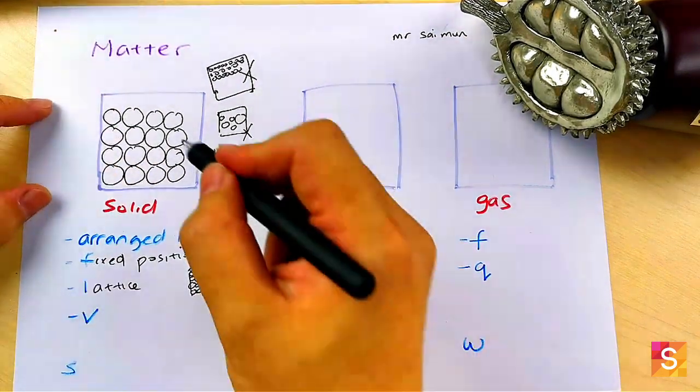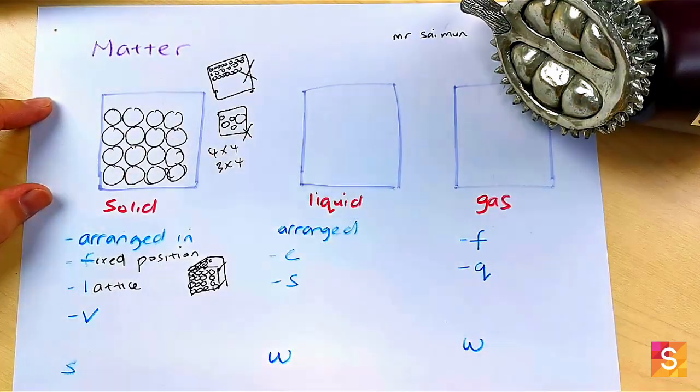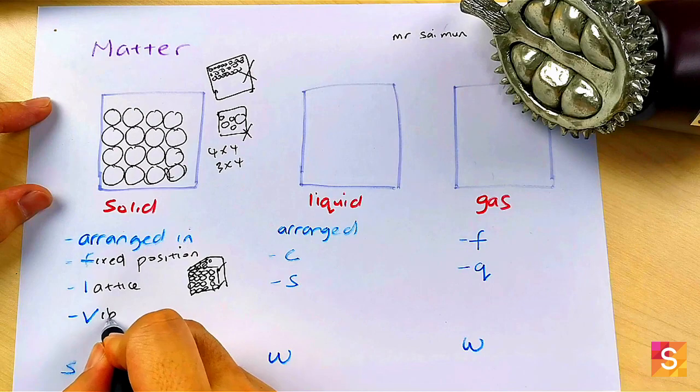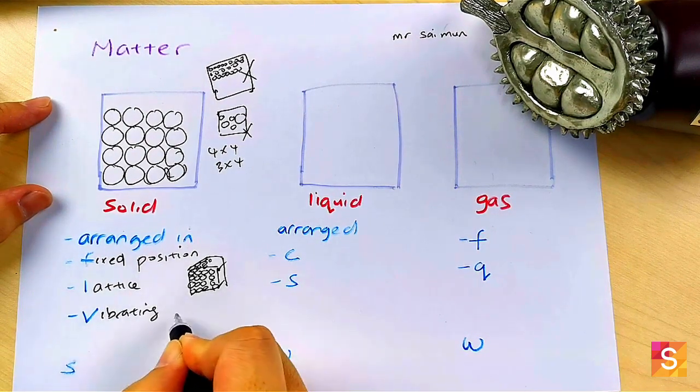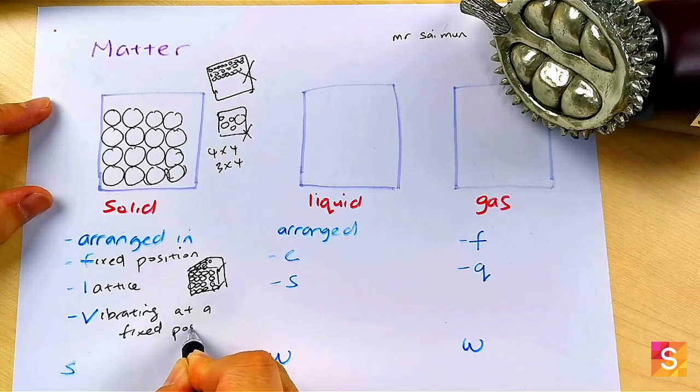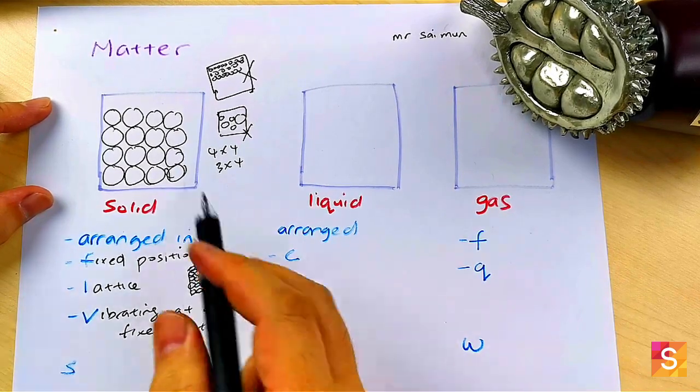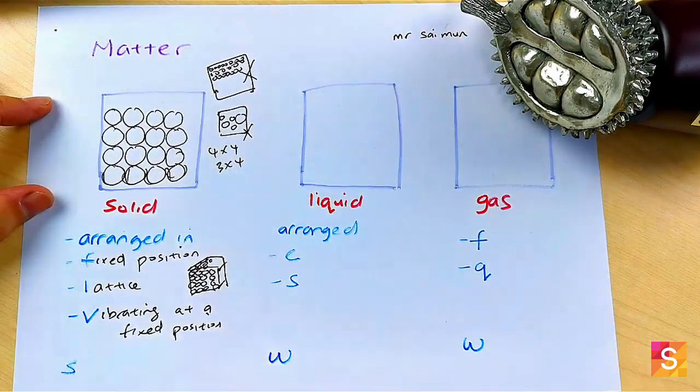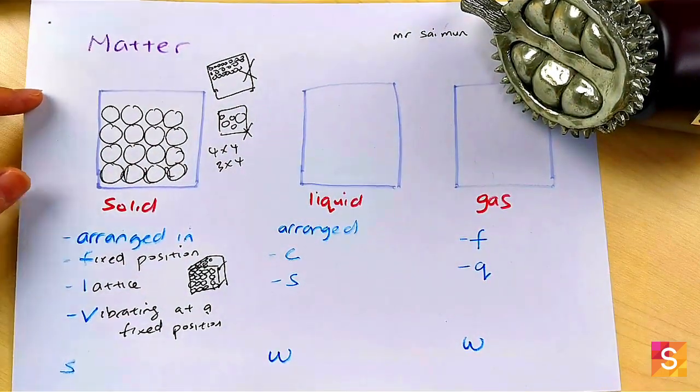And then they ask, what is the motion of the particle? So all these particles here are vibrating. Do not write not moving. They are vibrating at a fixed position. So all solid they're actually vibrating.